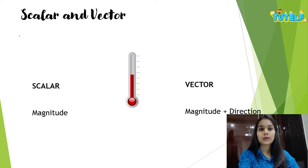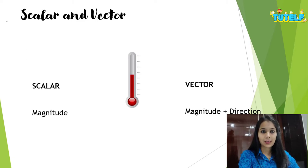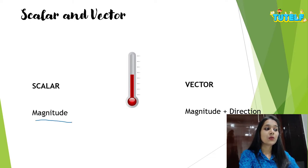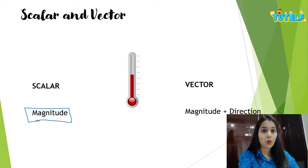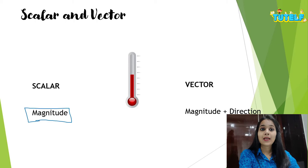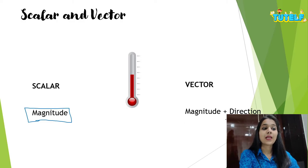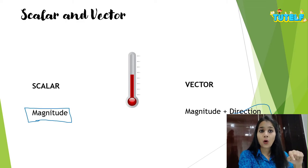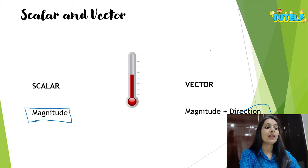Just have a look at this thermometer. When I say the temperature is 30 degrees Celsius, I am just telling you the magnitude, so it becomes a scalar quantity. But when I say there is a rise of 20 degrees Celsius, I am telling you the direction as well — it could be the rise or the fall of the temperature — so in that case, the temperature becomes a vector quantity.